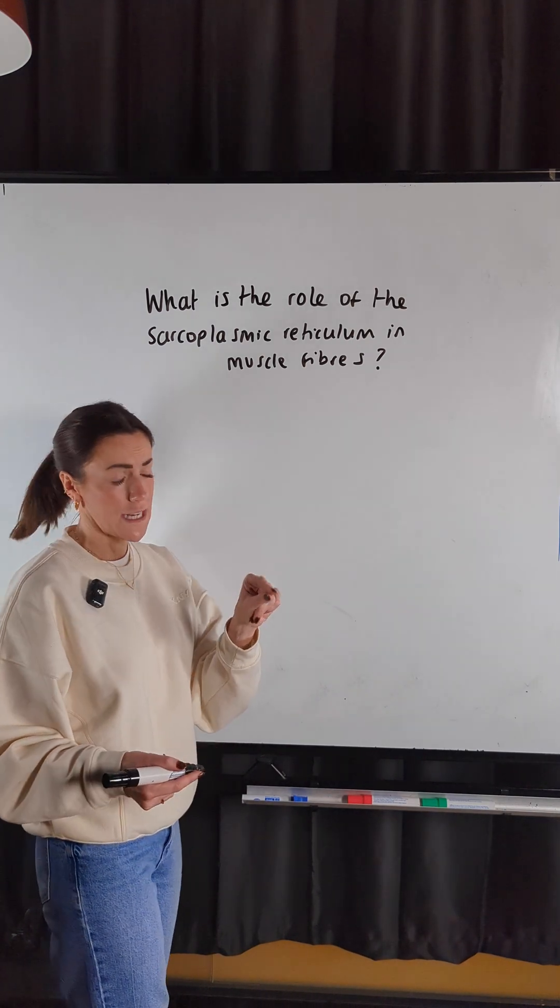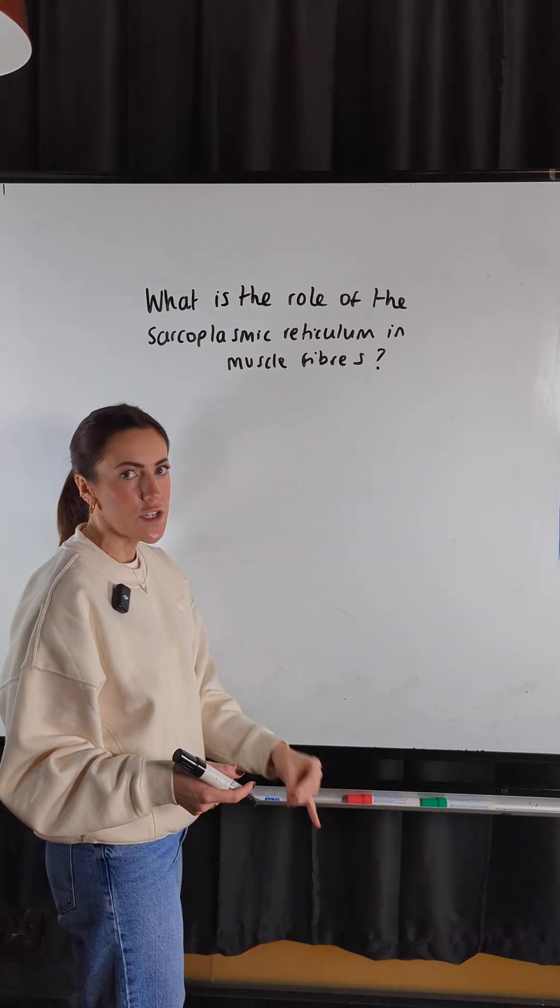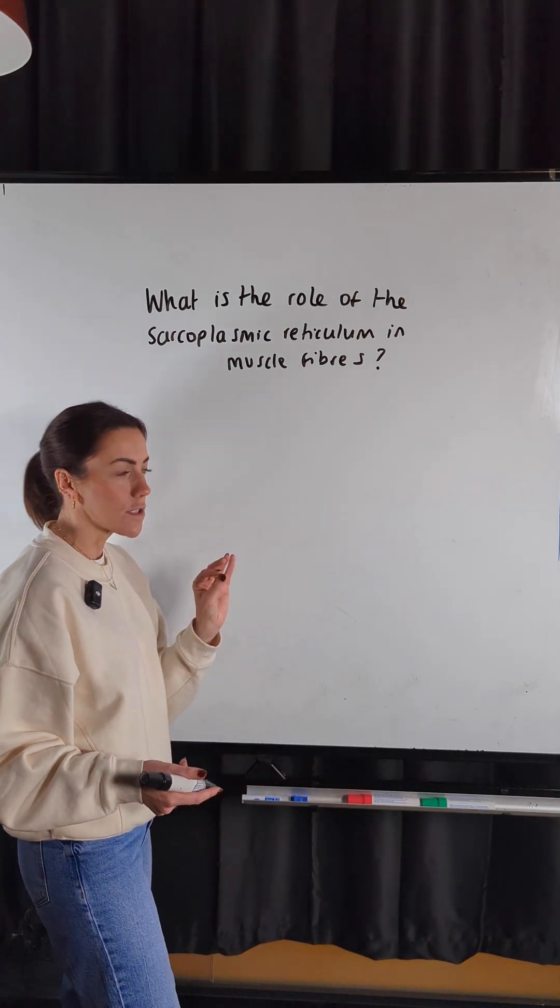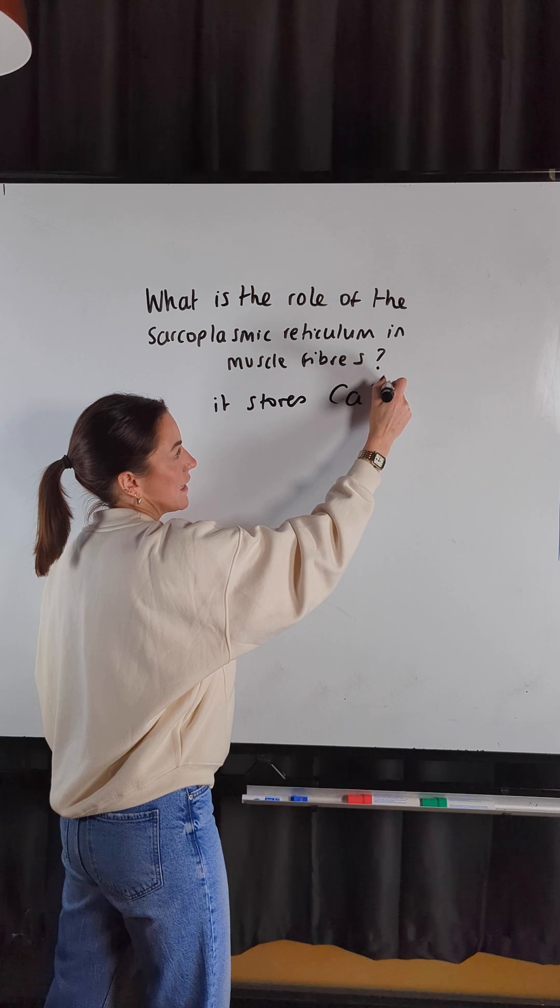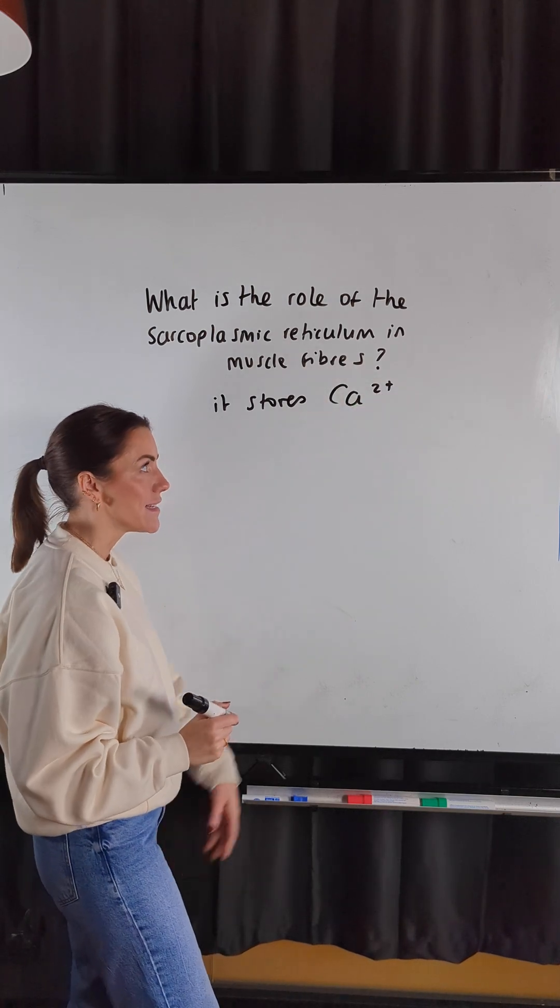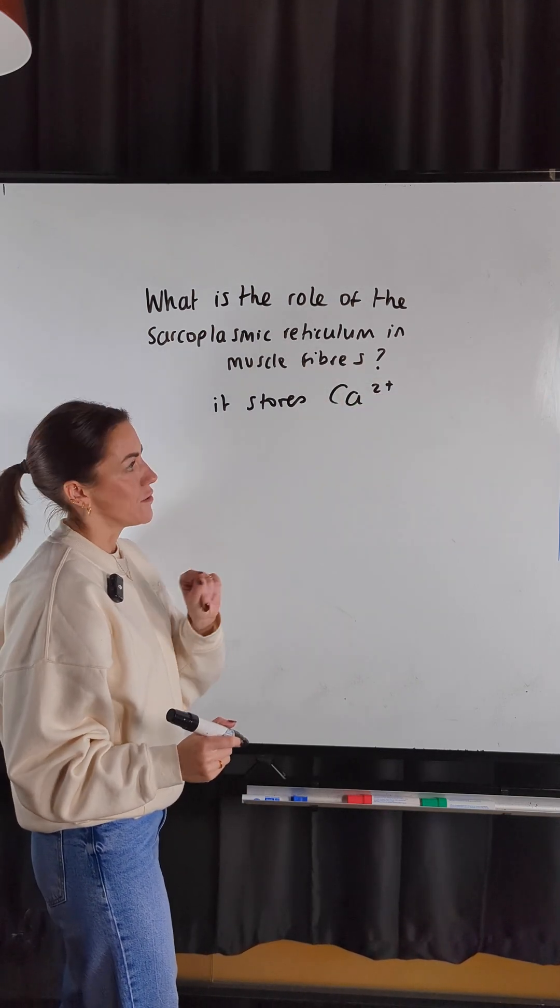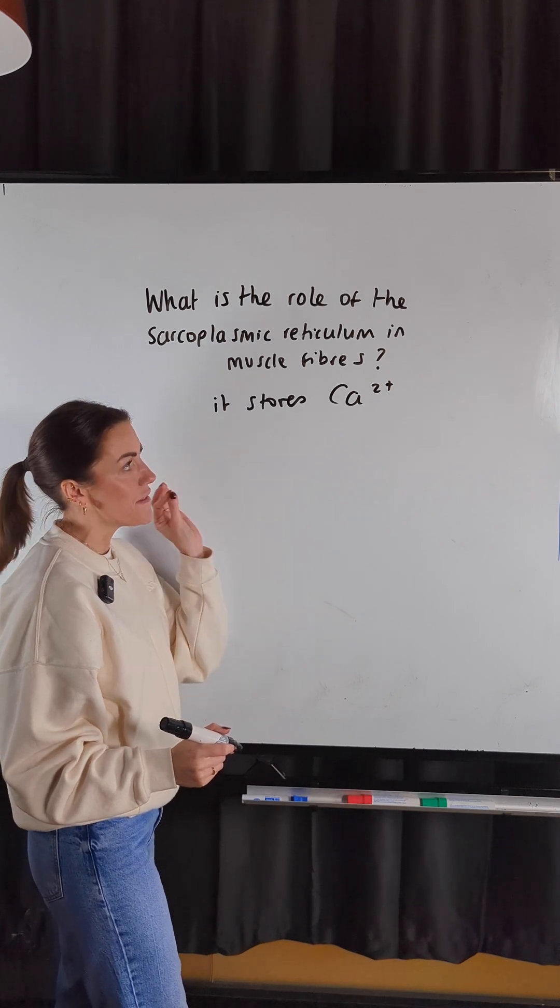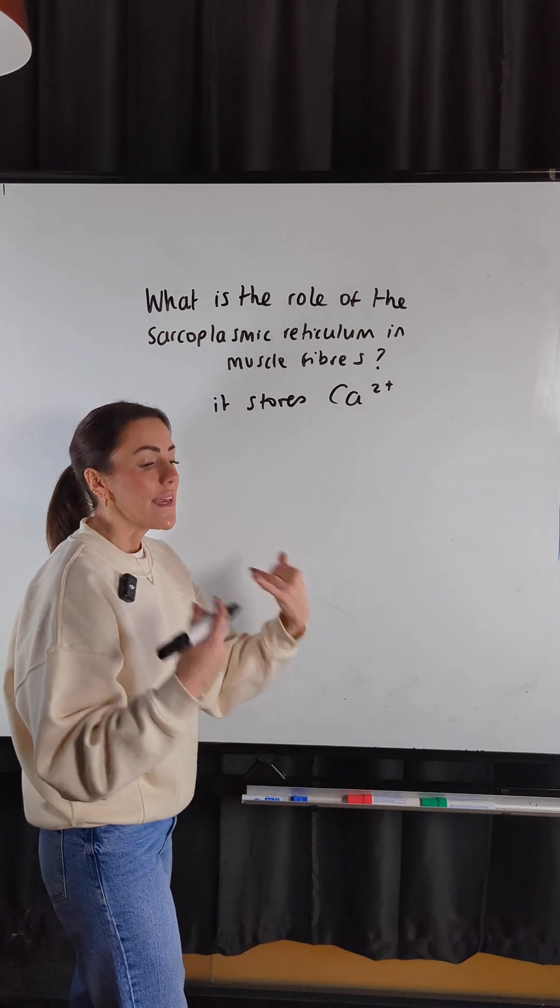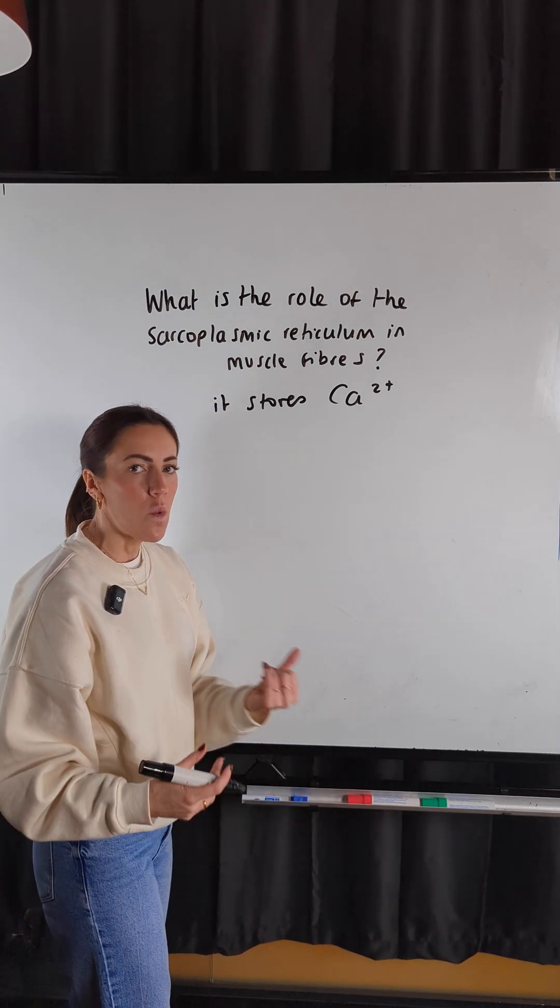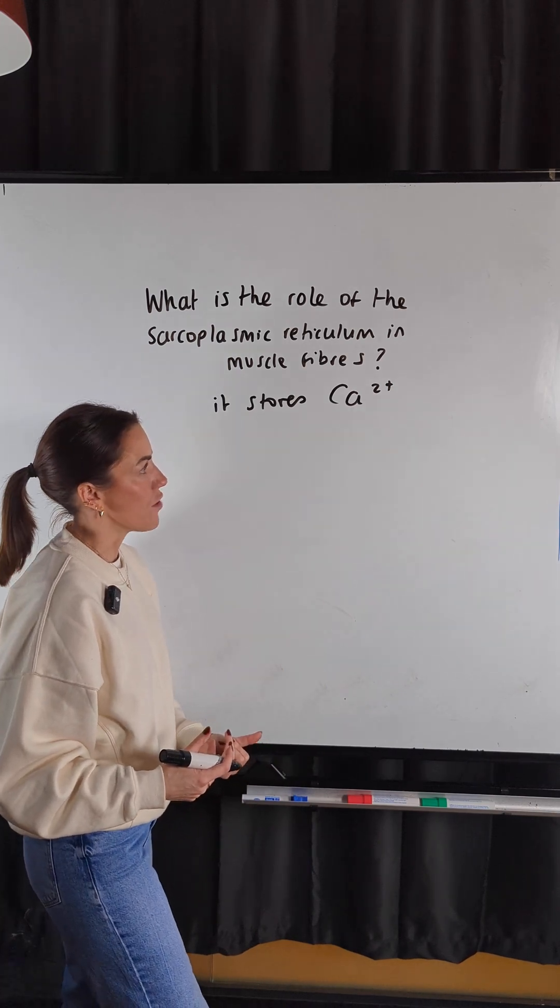So the sarcoplasmic reticulum is a type of smooth endoplasmic reticulum, but in muscle fibers, it stores calcium ions. Now, why do we need to store calcium ions? Well, they are released from the sarcoplasmic reticulum, and that is what stimulates muscle contraction.